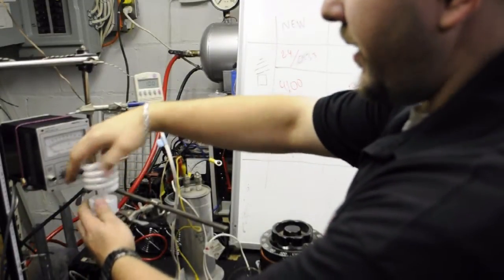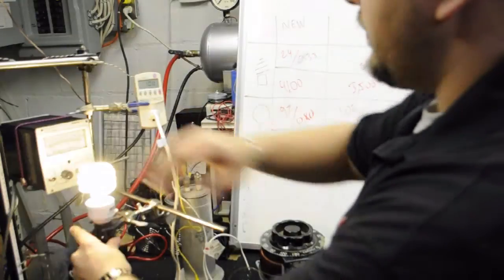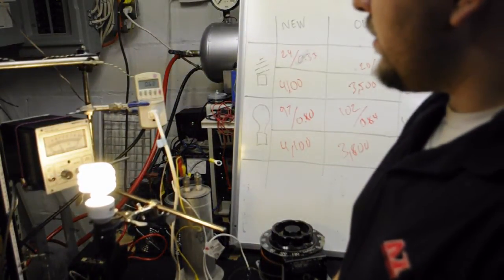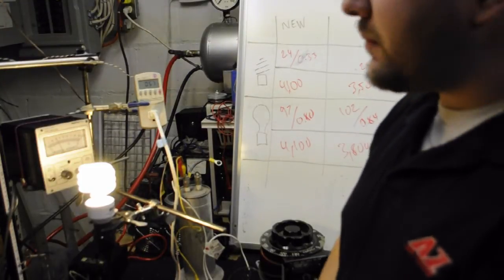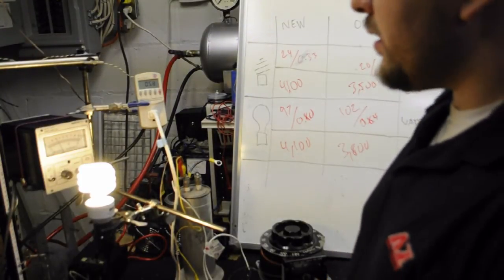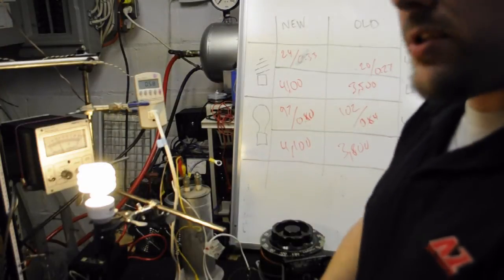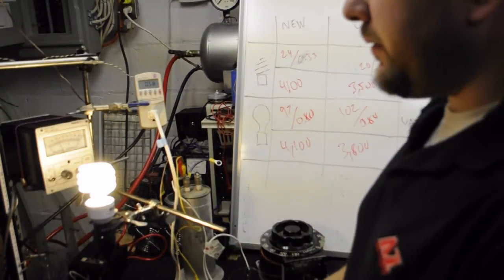I'm going to put the compact fluorescent in. And our power factor drops to 0.57. So by half. So you're paying for a good bit of power correction on the switching circuit that's inside the light bulb. It acts like an inductive load.